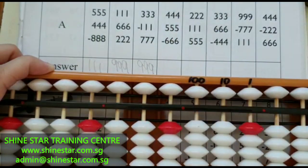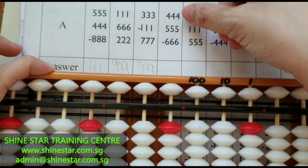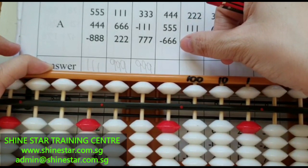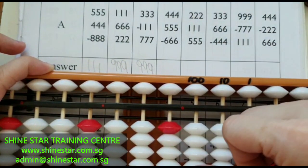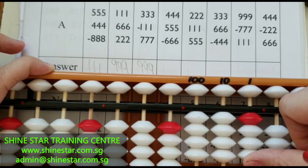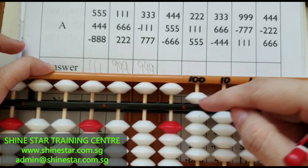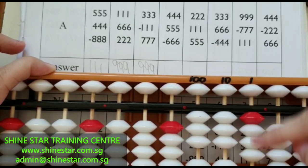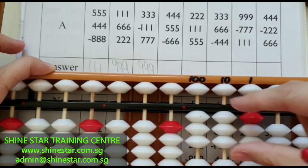The next question: 444 plus 555 minus 666. The answer is 333.